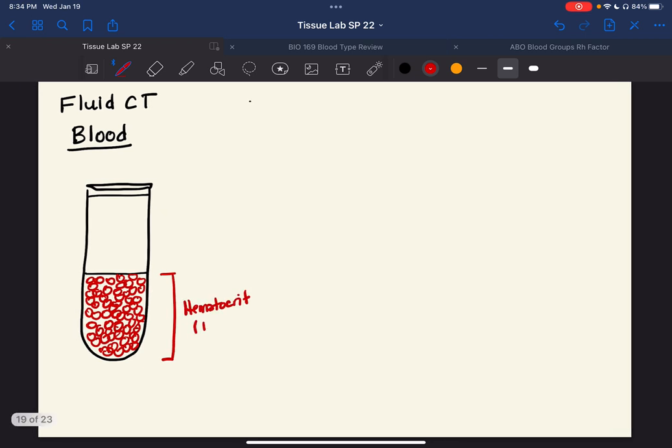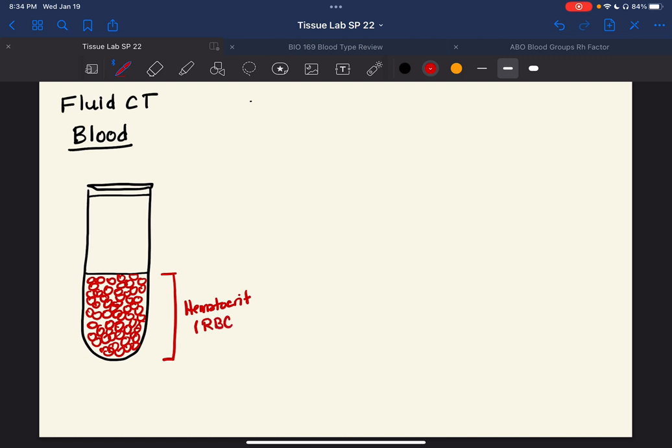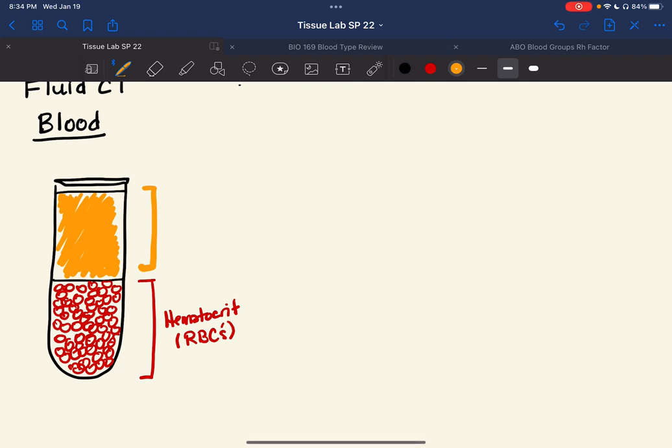It's really just the percentage volume of red blood cells. So that's one thing in our blood sample. Another thing in our blood sample, I'm going to color the entire upper portion of this sort of a yellow. This part is known as the plasma. And there's this funny little band in the middle called a buffy coat.